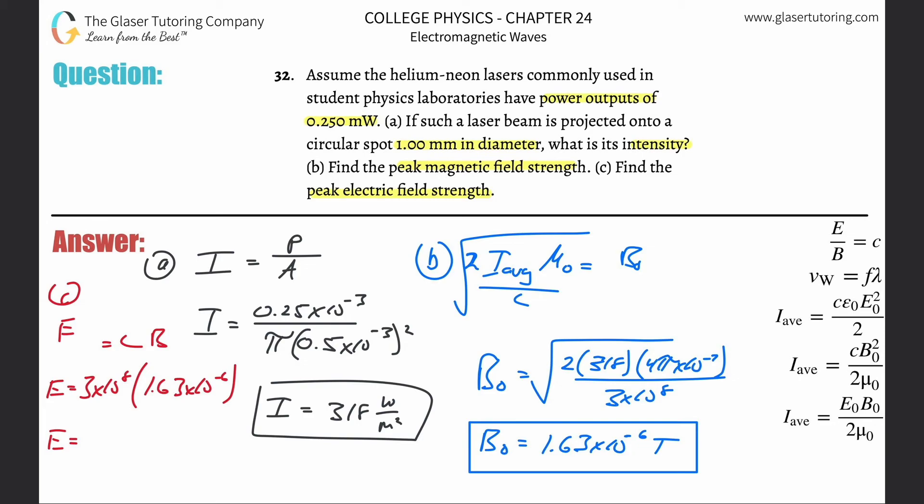So three times 10 to the eight, multiplied by that value, we get a value here of about 490 volts per meter. Those are the units of electric field.